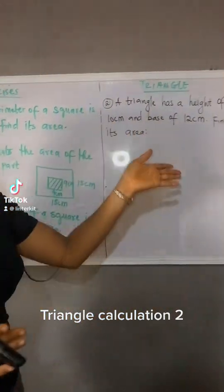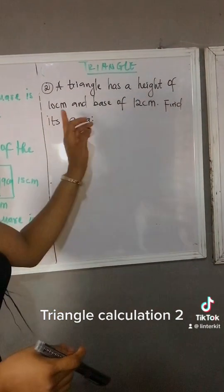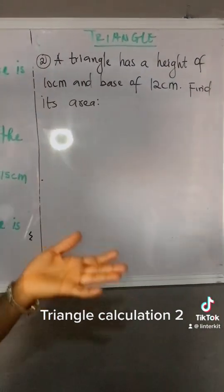So question 2 of the calculation aspect of a triangle says, a triangle has a height of 10 cm and a base of 12 cm. Find its area.